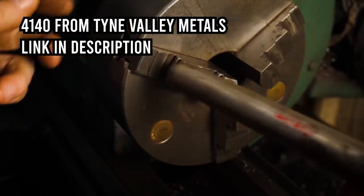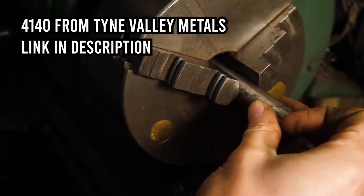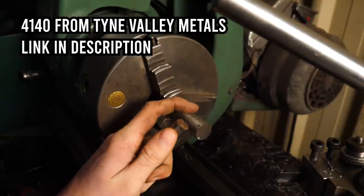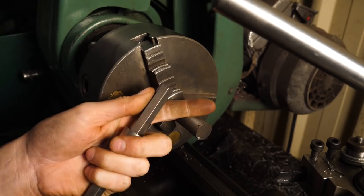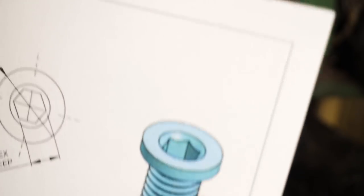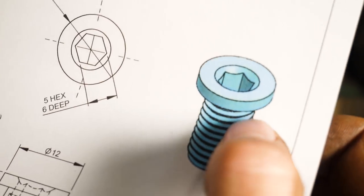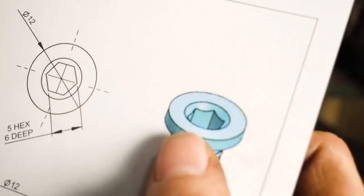I'm using 4140 steel for the fastener. I got this from Tyne Valley Metals and there's a link to them below. I'm using 4140 for its strength. The square flange is subject to high stress and I don't want it to snap off. I'll explain why I designed the fastener this way later in the video.